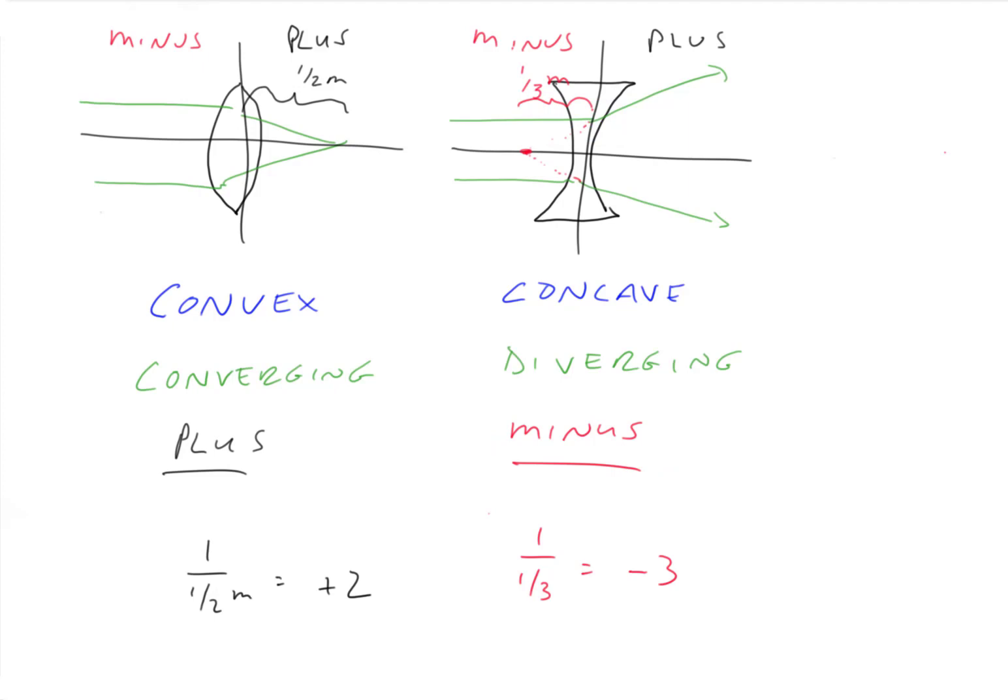So that's where the signs come from. When we say we have a minus three lens or we say we have a plus two lens, that's what the plus and the minus really mean. It's defined in this way.